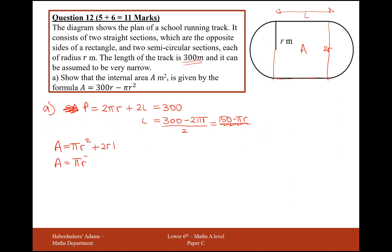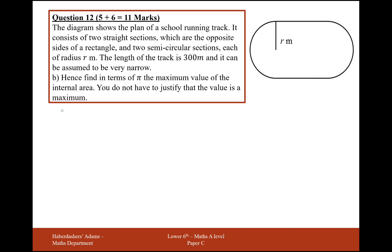So the area is therefore going to be represented as πr squared plus 2r. I'm going to replace L with 150 minus πr. So expanding the brackets here, I'm going to get πr squared, add 300r minus 2πr squared. So we can simplify this term and this term here. So that's just going to give us 300r minus πr squared. So that's the first part of the formula worked out. So we have the area here is equal to 300r minus πr squared.